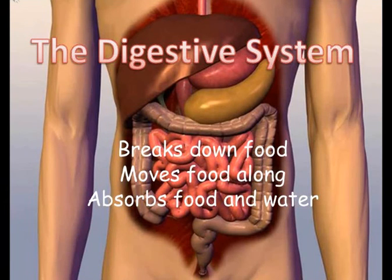This video will tell you all you need to know about your digestive system. It will tell you what the role of the digestive system is and how each of the different organs that are involved achieve this. It will also show how the digestive system is linked to the circulatory system and the big idea of respiration, which is crucial to understanding any aspect of human biology.